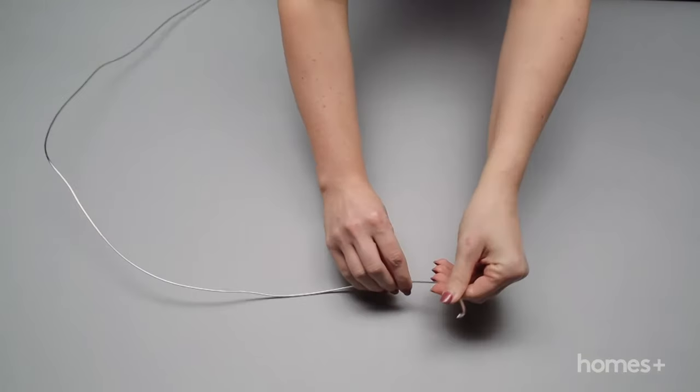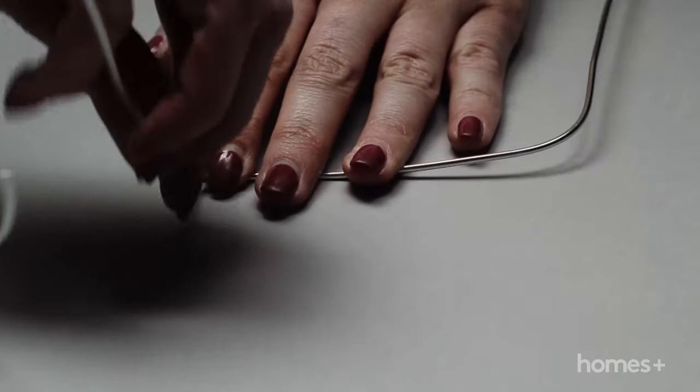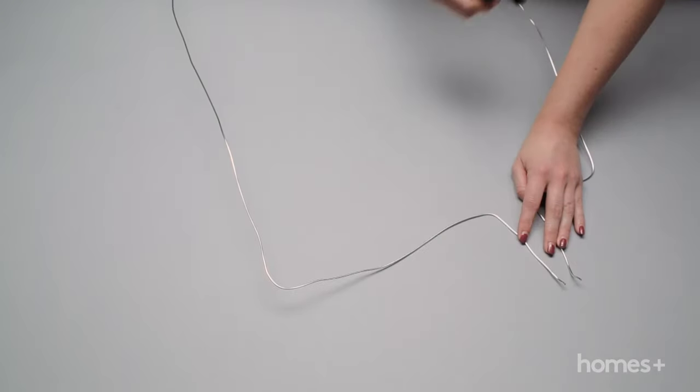Take one end of the wire and carefully bend and mold it to create a speech bubble shape as the frame. When you're happy with the shape and the size, use the pliers to cut the wire.